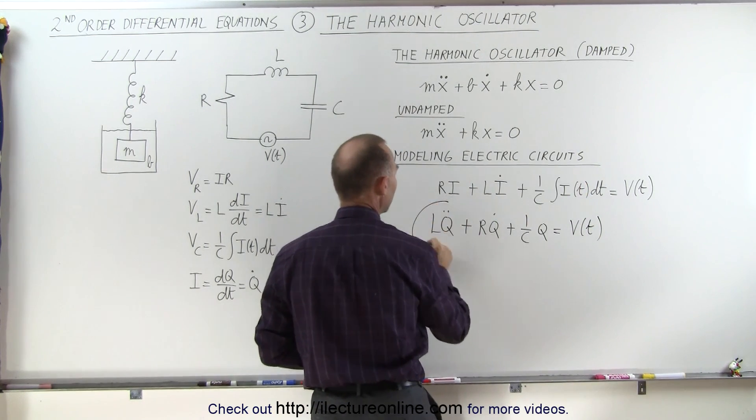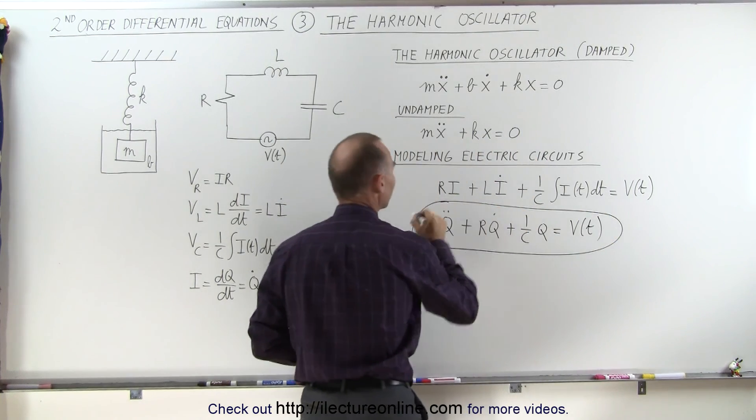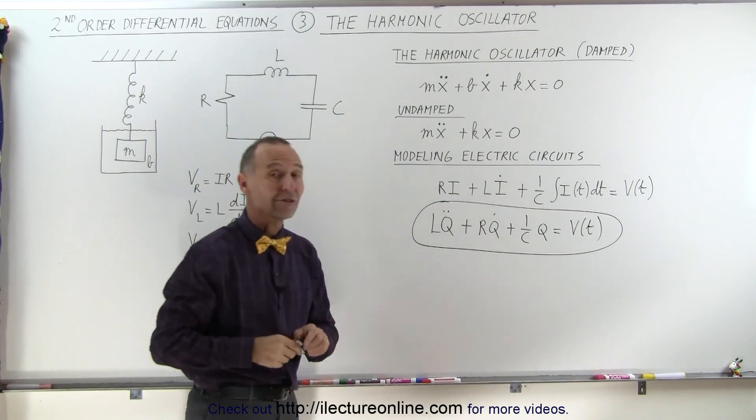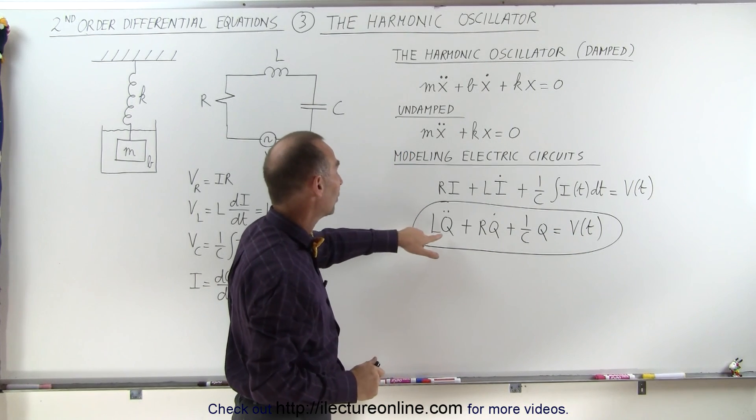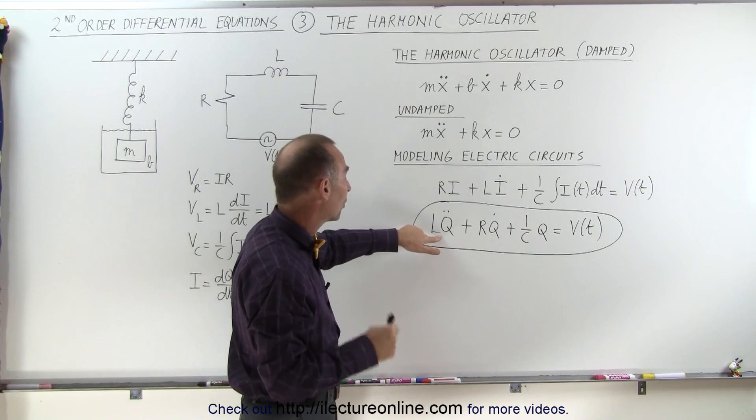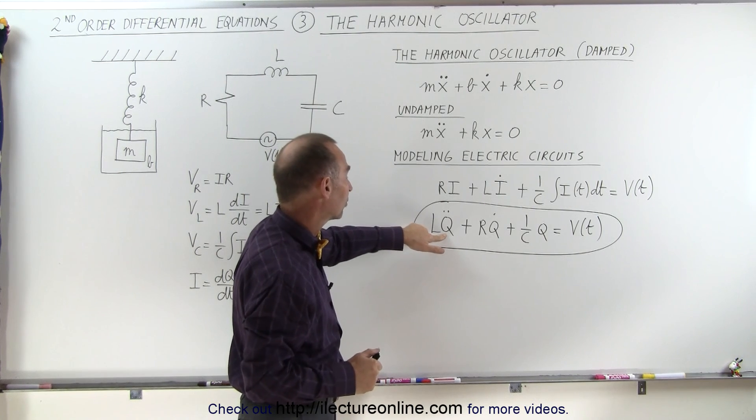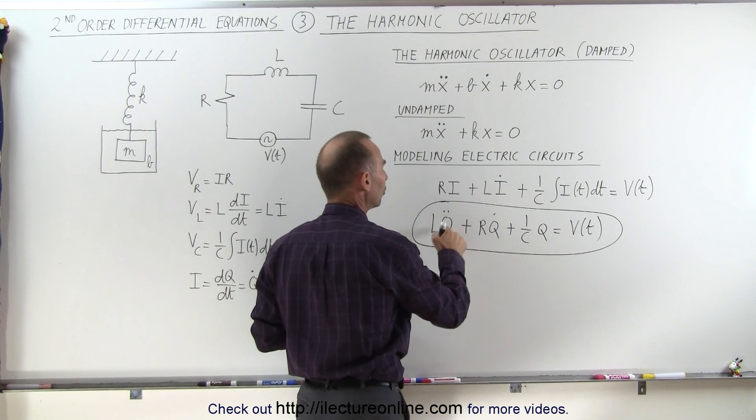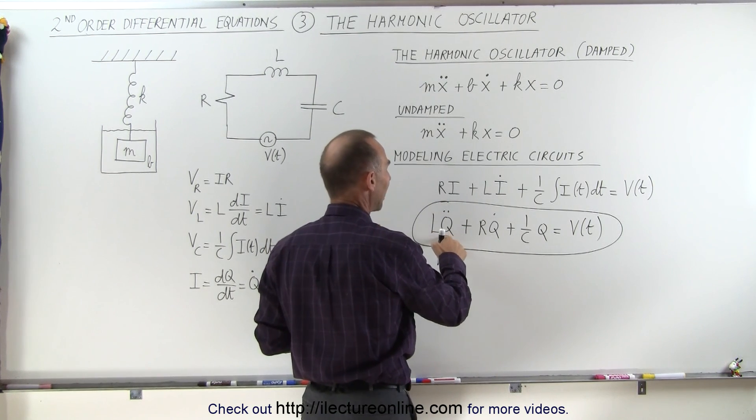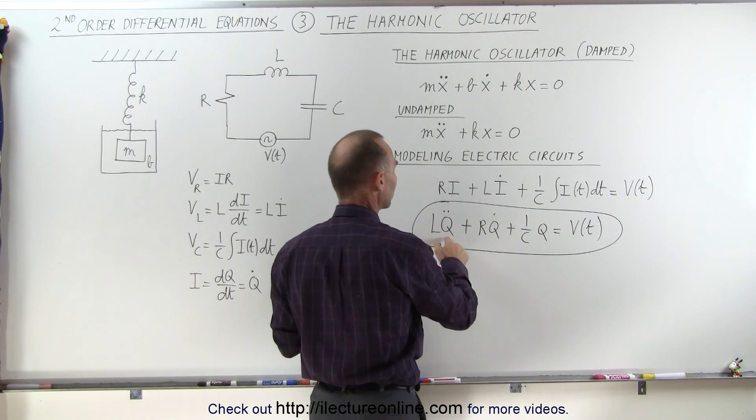And so this would then become the second order differential equation. It's the non-homogeneous type, because we do have a voltage source, and that will then simply be a function of how much charge there is across the inductor, or I shouldn't say how much charge there is, because q double dot is equal to i dot, which is the derivative of the current.